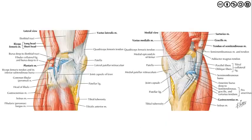Looking at these images from Netter's, we can appreciate both the lateral and medial views. Several things to note include where muscles, tendons, and ligaments insert. Here we can see the iliotibial tract crossing the knee joint and inserting just lateral and proximal to the tibial tuberosity. We can appreciate the orientation of the biceps femoris, both long and short head, on this lateral view, as well as the vastus lateralis. Additionally, we can appreciate the subtendinous bursa for the biceps femoris as well as the bursa lying deep to the distal iliotibial tract.